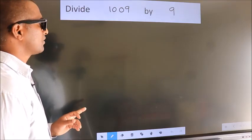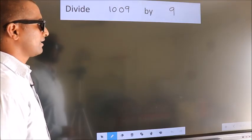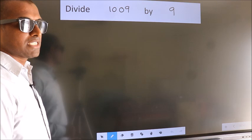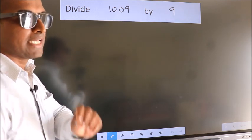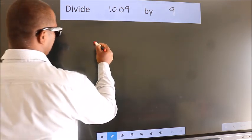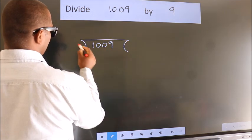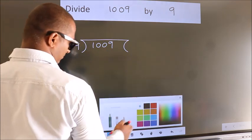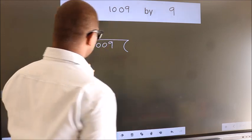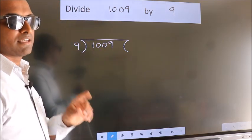Divide 1009 by 9. To do this division, we should frame it in this way. 1009 here, 9 here. This is your step 1.